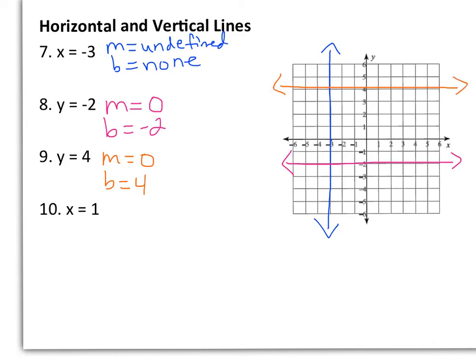And lastly, x equals 1, so my slope is undefined. I do not have a y-intercept. I will have a vertical line where x is 1. And that's how we graph vertical and horizontal lines.